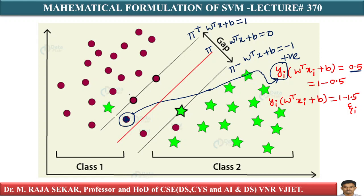Why? Because we are assuming this point is half the way in between π plus and π. Therefore, let this be 1 into W transpose Xi plus B, that is 0.5, which can be written as 1 minus 0.5. Therefore, yi into W transpose Xi plus B is equal to 1 minus 0.5.